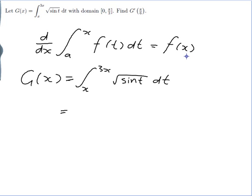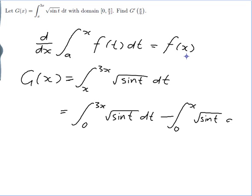So this would be equal to the integral from 0 to 3x of the square root of sin t dt minus the integral from 0 to x of the square root of sin t dt. Now this integral just here, I can do straight using my formula.